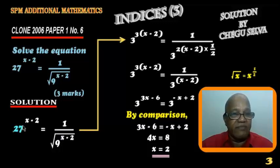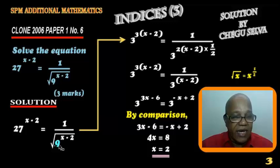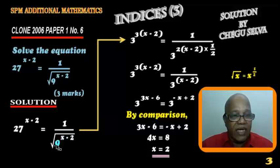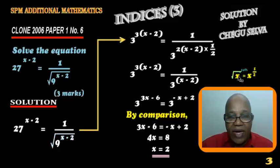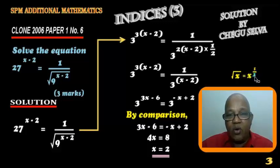So twenty-seven is three to the power of three. Nine is three squared. Now square root can be written like this: the square root of X equals X to the power of one over two, or X to the power of half.